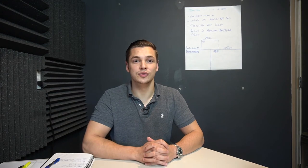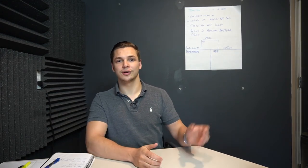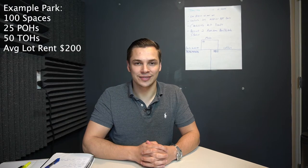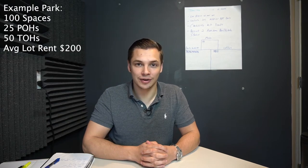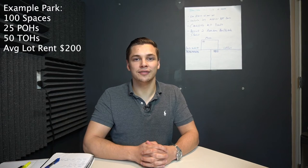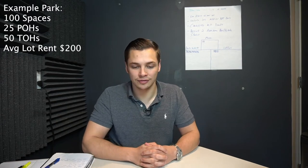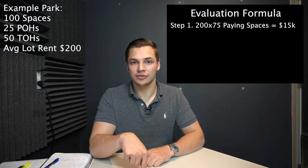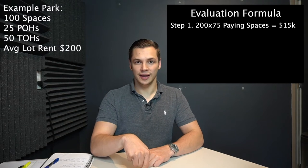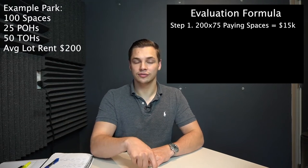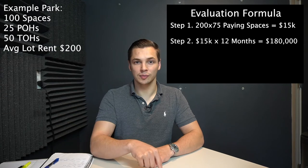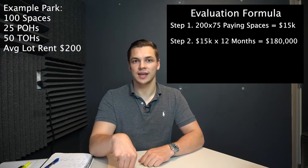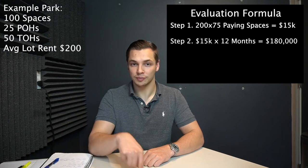Now that we have all this information, we're going to move into our formula — super easy, I'll throw it on the screen. We're going to say we're dealing with a 100-lot park, 100 unit park, and we have 75 occupied spaces paying $200 a month. We're going to multiply 200 times 75, and that'll give us our gross potential rent for that month. Then we multiply that by 12 across all 12 months, and that gives us our gross annual rent potential.